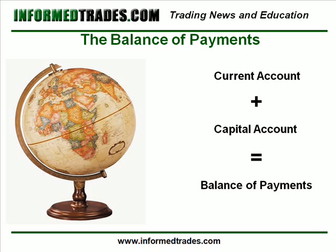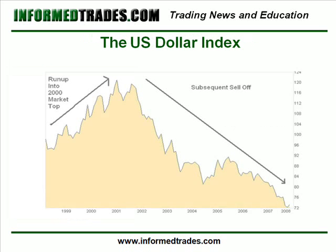To help understand this better, let's look at the example of the U.S. dollar. As we've discussed in previous lessons, the United States has run a very large current account deficit for quite some time, meaning that the country has imported way more goods and services than it has exported. As this chart of the U.S. dollar index shows, however, for a number of years the U.S. dollar continued to strengthen despite this large current account deficit. As you can see here, going up into 2000, although the U.S. ran a persistent current account deficit, the currency overall continued to strengthen before starting to sell off from late 2000 forward.